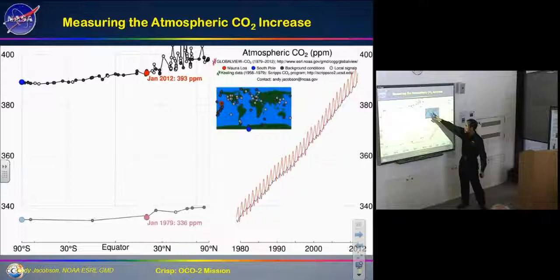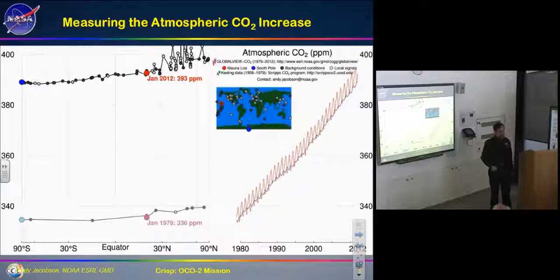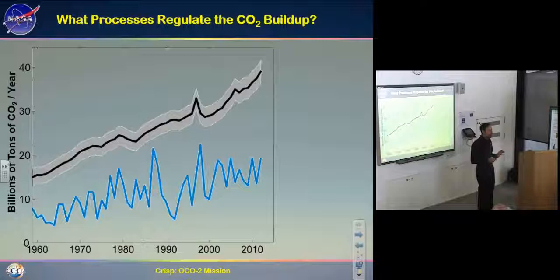There are lots of stations over North America and Europe, almost none in South America, none in Africa, very few through most of Asia. The Arctic is also very lightly populated with stations. Certain heroic people go there and make critical measurements, but we don't really have the measurement base needed.